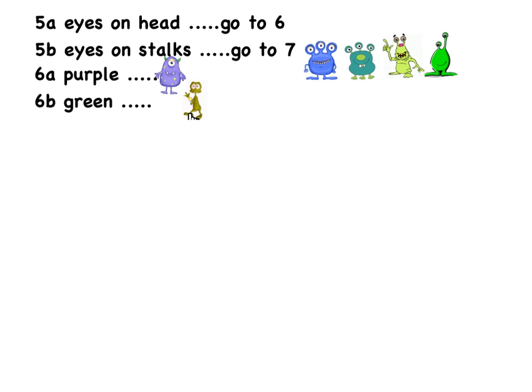Notice that I don't have every green alien here in this category. To get to six, I first had to choose legs, then I had to choose eyes on head. So it's only the green one that has both legs and eyes directly on its head that ends up here, and it is uniquely identified even though we do have some other green aliens.